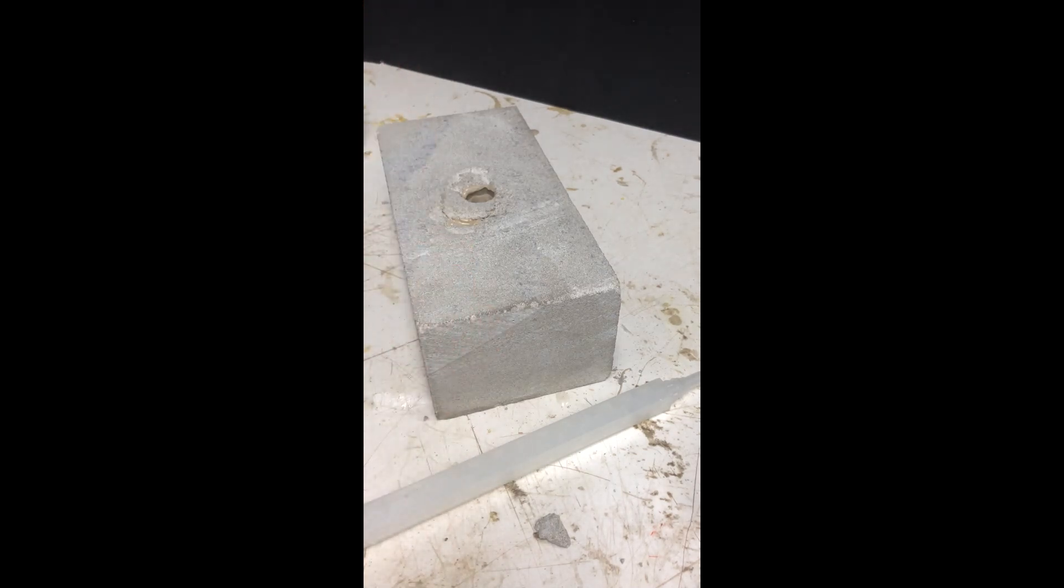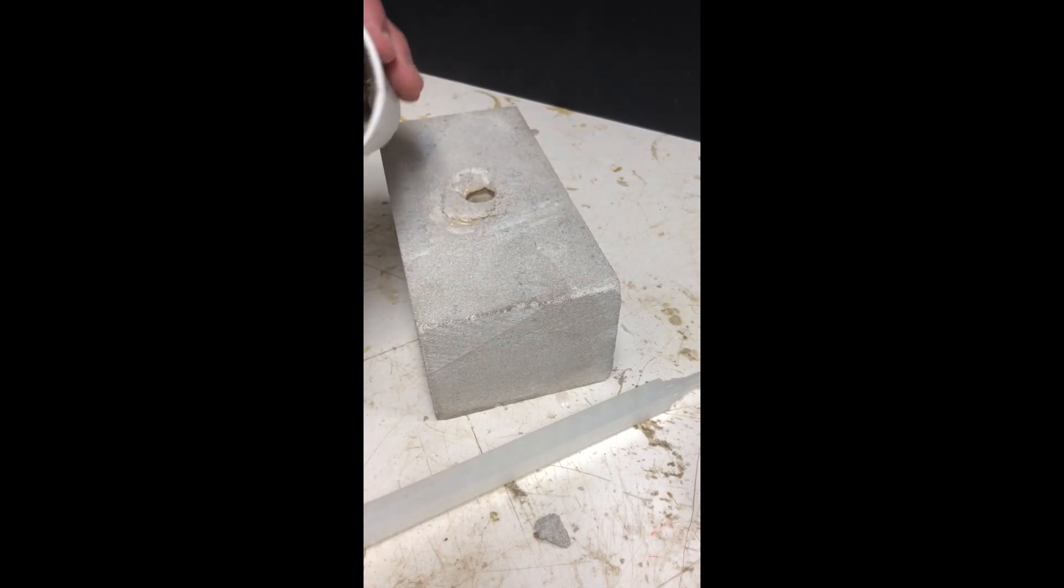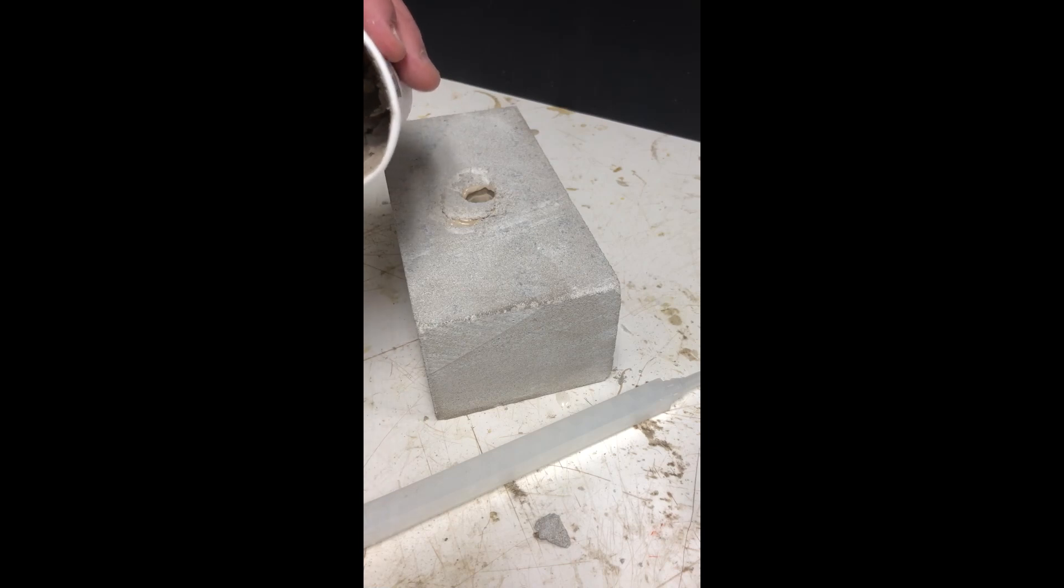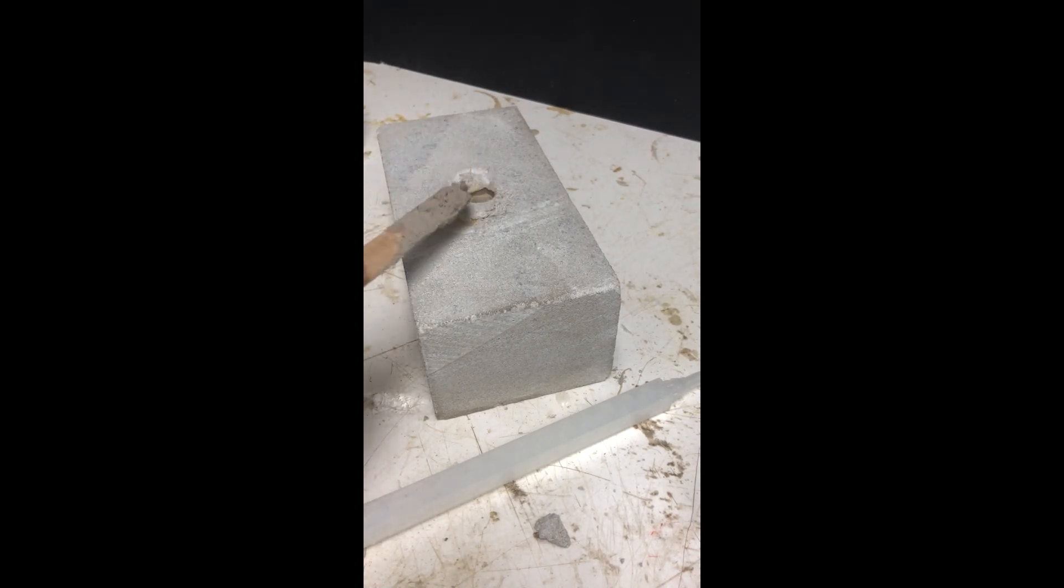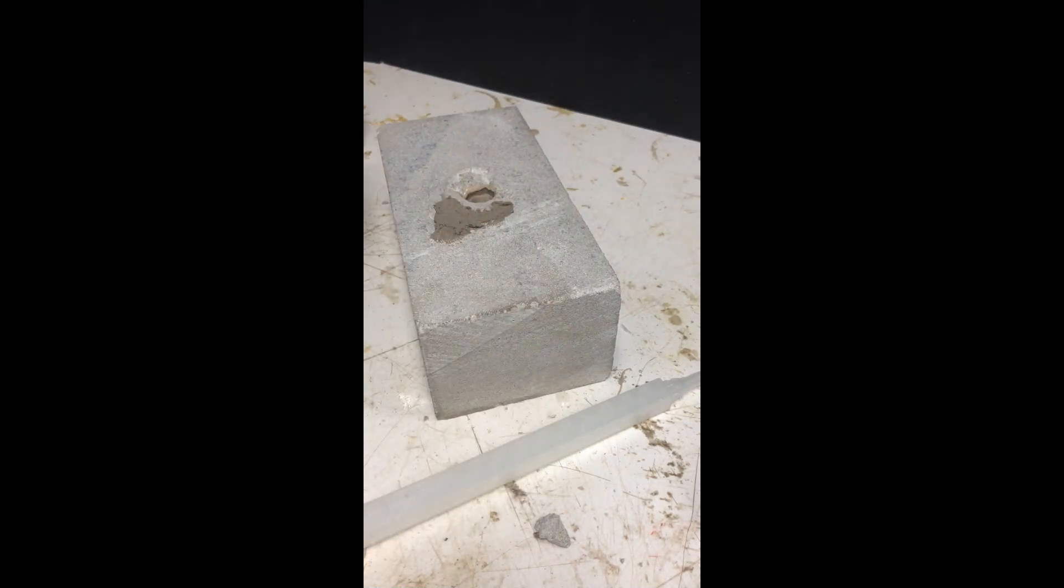So simply mix it up to a mortar consistency like this. And since it will dry out a lot lighter, we do have color chips that you can match it up with. Simply push it into place. What you want to do is keep it slightly overfilled in any of the small areas.